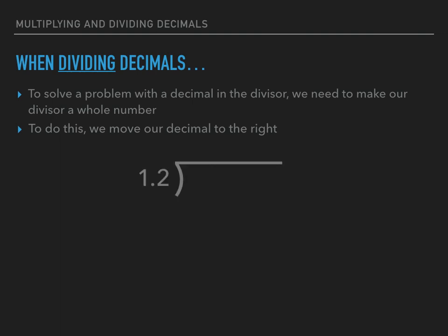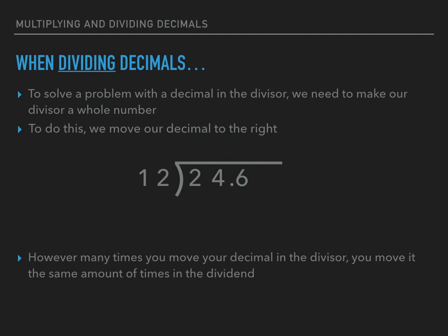I have one and two tenths, and we are dividing twenty-four and six tenths by one and two tenths. The very first thing I'm going to do is take that decimal in my divisor and move it to the right. This makes it a whole number, giving me twelve. Our next step is to move our decimal in the dividend as well — whatever we do to the divisor we have to do to the dividend. I've moved the decimal one place in my divisor, so I move it one place in my dividend too. Now I have two hundred forty-six divided by twelve.